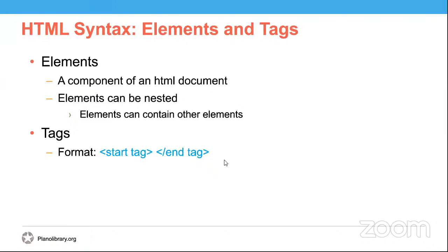To create the tags, you use a left angle bracket, the element name, and then a right angle bracket. This makes up the opening tag. A closing tag has a left angle bracket, a forward slash, and then the element name, followed by a right angle bracket. Oftentimes the word element and tag are used interchangeably, but the key difference is that tags are the opening and closing punctuation needed to create elements.